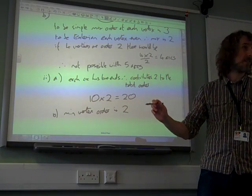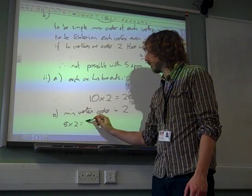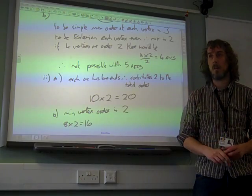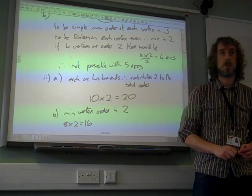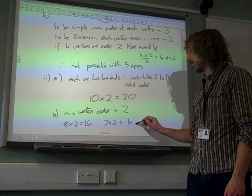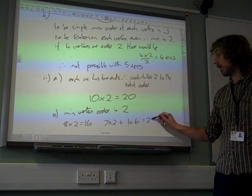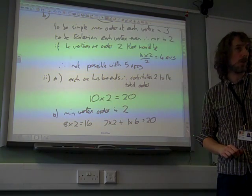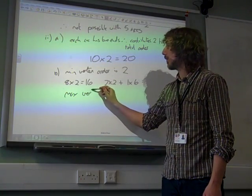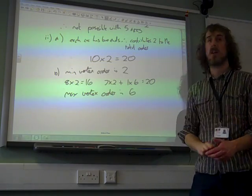If we have eight lots of two, so if all of them had order two, that would only be 16. And remember, the total of the orders can go up to 20. If we do seven lots of two, plus one that is six, then that gives us 20. So once we can draw that, it looks like that is possible. So the maximum vertex order is six.